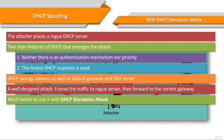Let me clue you in on another important point while setting up a rogue DHCP server. We cannot be so sure whether the client received the settings of the rogue server or the legitimate server. That's why it's way better to use the DHCP spoofing attack together with a DHCP starvation attack.